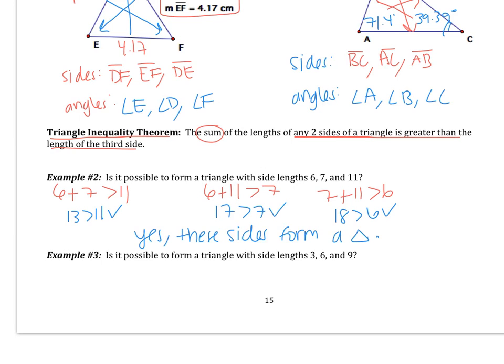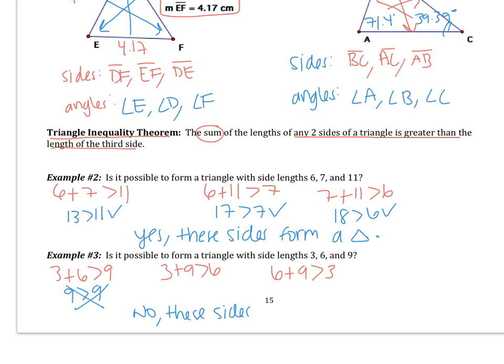Pause and try example 3 on your own. For problem 3, if you take any two sides and add them, they should be greater than the third side. So 3+6 should be greater than 9, 3+9 should be greater than 6, and 6+9 should be greater than 3. Simplifying, 9 is greater than 9 — that is not true. So no, these sides do not form a triangle. All three inequalities must hold; as soon as one fails, the triangle does not exist.